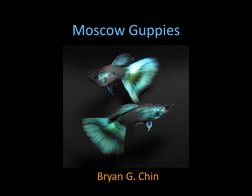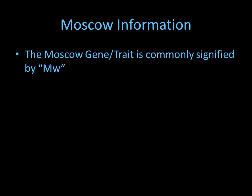Hello, this is Brian Chin and in this presentation we'll be talking about Moscow guppies. The Moscow trait or gene is commonly signified by MW. It's a dominant trait and is Y-linked. Within a Moscow line only the males carry this Moscow trait, and if you use the females from a Moscow line and cross to a male that has no Moscow, none of her babies will have the Moscow trait. So if you want to pass on the Moscow trait, use a male.